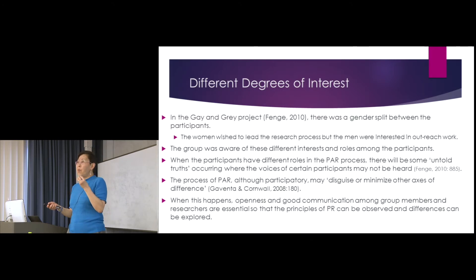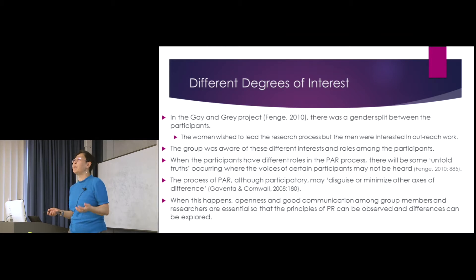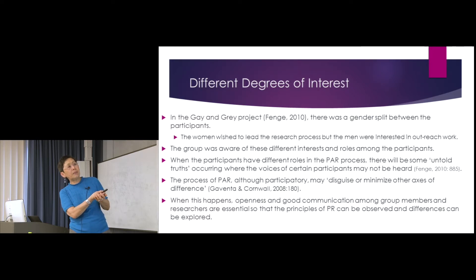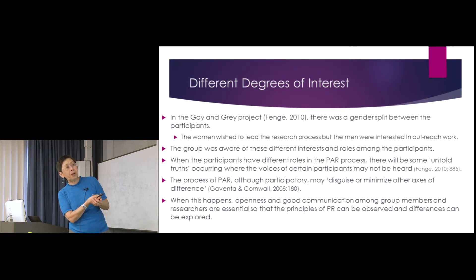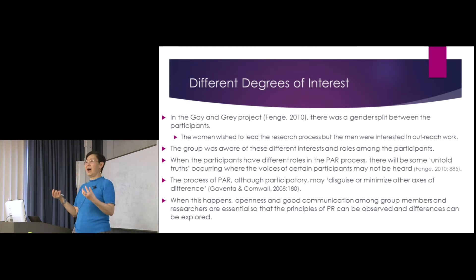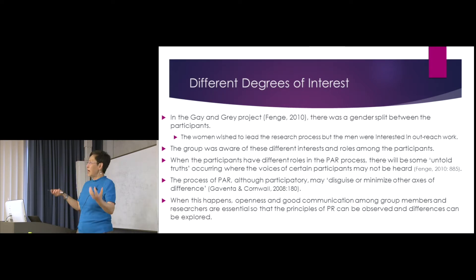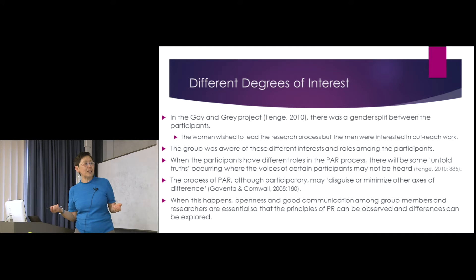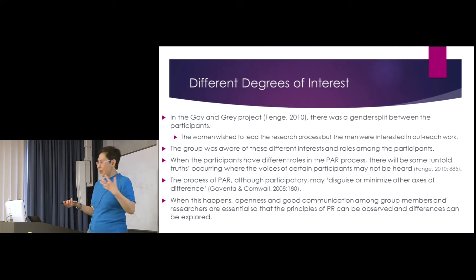The responsibility in the research project may be different, and that's part of the degree of interest. Here I want to give you the example from the Gay and Grey project — because the project involved both men and women, the women wished to lead the research process but the men were interested in art-rich work. So there are different levels or different interests that people might have. How do you balance that when some participants want to do one part and others want to do another?